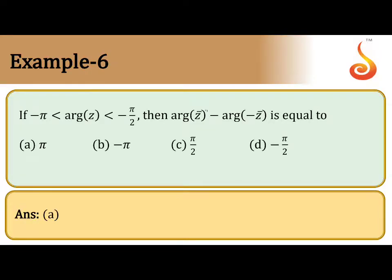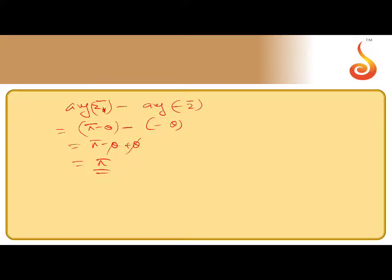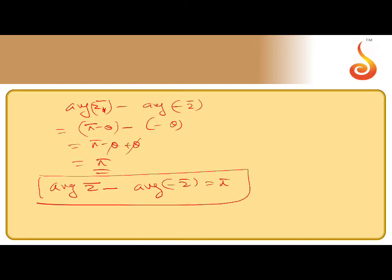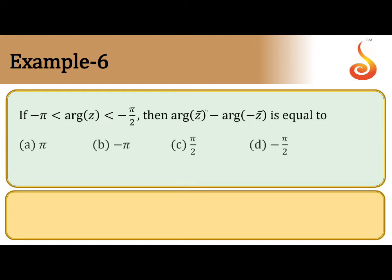The required answer is option A. Arg(z̄) minus arg(-z̄) equals π. Checking the answer confirms that A is the right answer.